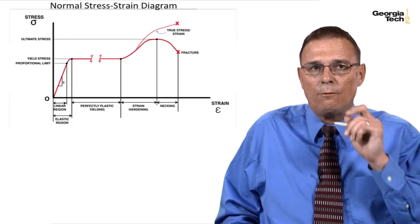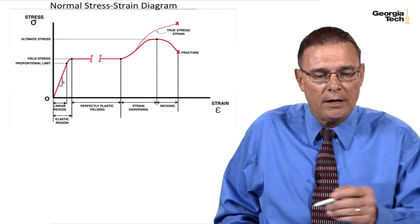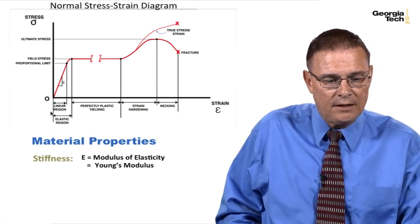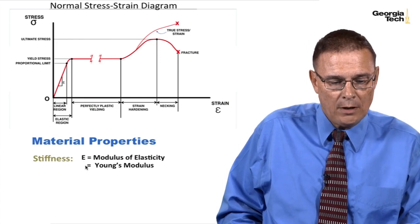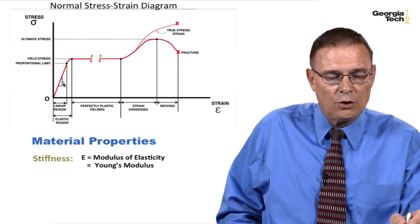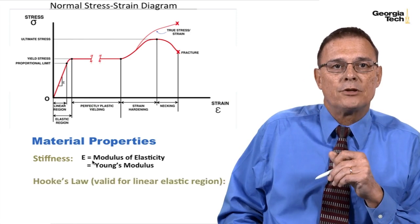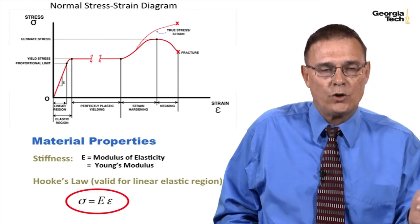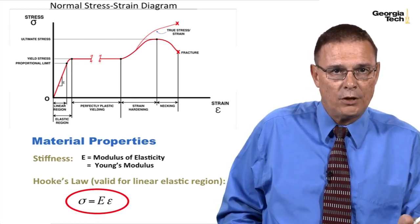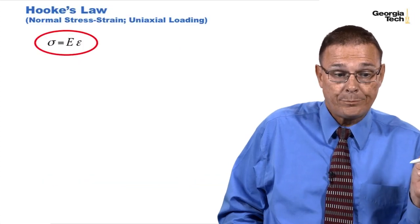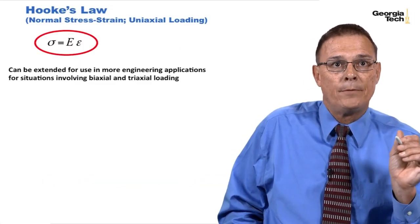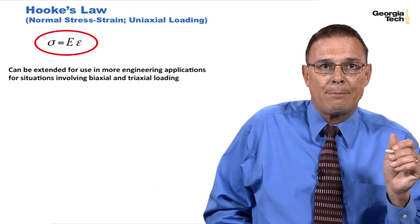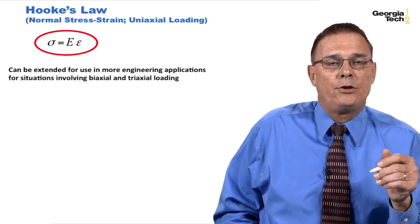Recall back to earlier in the course when we came up with the stress-strain diagram. For material properties, we said that the stiffness in the linear region, or the slope, was equal to Young's modulus or the modulus of elasticity. In that linear elastic region we had Hooke's Law — for a uniaxial loading, the stress equals Young's modulus times the strain, epsilon. We can extend this for use in more general engineering applications for situations involving biaxial or triaxial loading.